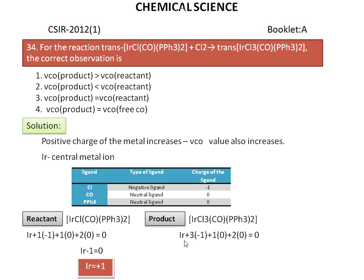Next we calculate for the product molecule. In this case: iridium + three chlorines (charge −1 each) + one carbonyl (charge 0) + two triphenylphosphines (charge 0) = charge of the complex, which is zero. So we get the charge of iridium in the product as +3.